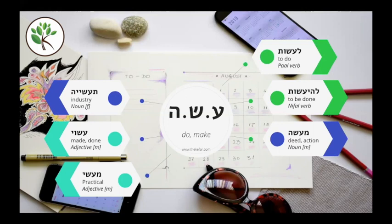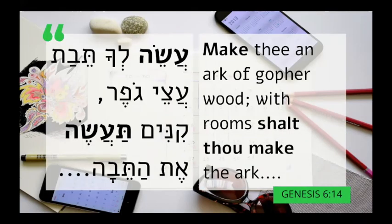Now let's look at a couple of passages from the Tanakh where we see this shoresh asa — the Tanakh link is included in the description. In this verse from Genesis 6, we see the verbs ase and ta'ase, both from the pa'al verb la'asot, meaning to do or to make. Ase is the masculine singular imperative, meaning make. And ta'ase is the second person masculine singular future tense, meaning you will make.